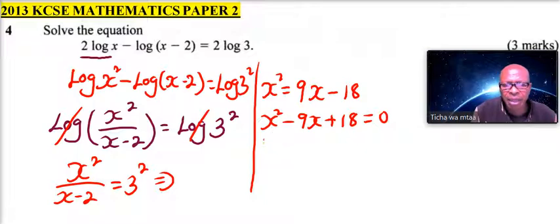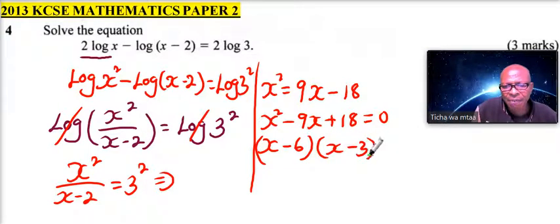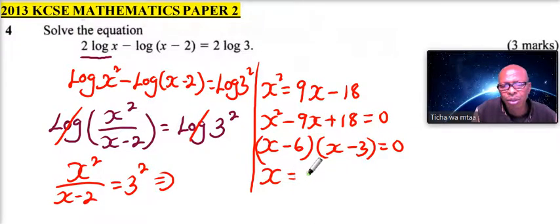This is a quadratic equation, and you can use the factorization method, and you will be able to write the factors: x minus 6 and x minus 3 is equal to 0. So we will say x is equal to 6 or x is equal to 3.